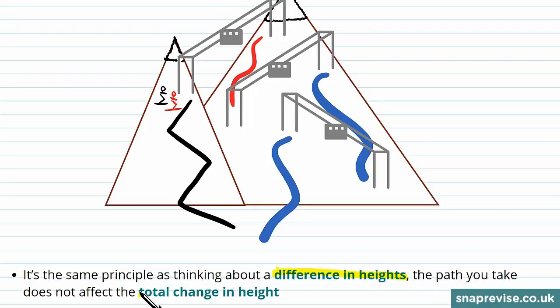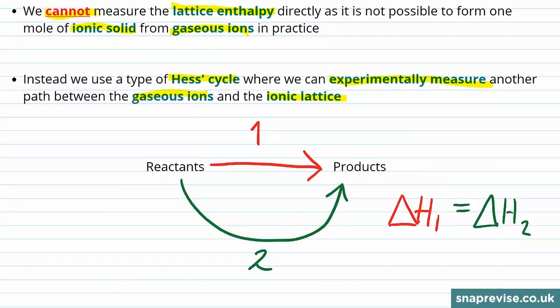If one skier decides to go further up and take these three paths down, and the other skier goes straight down this black run here, then they've both traveled across the same distance in height if they meet again at the bottom. This is equivalent to it not mattering which direction through a reaction you take, each path will have the same enthalpy change.